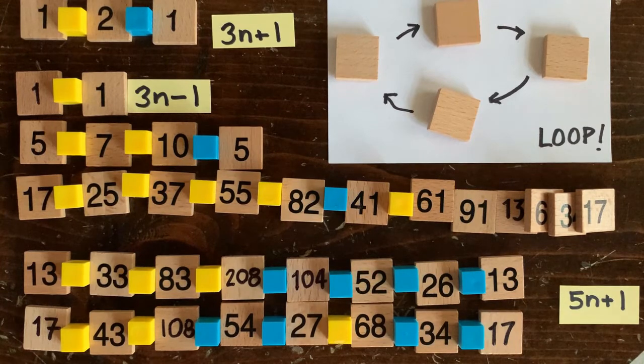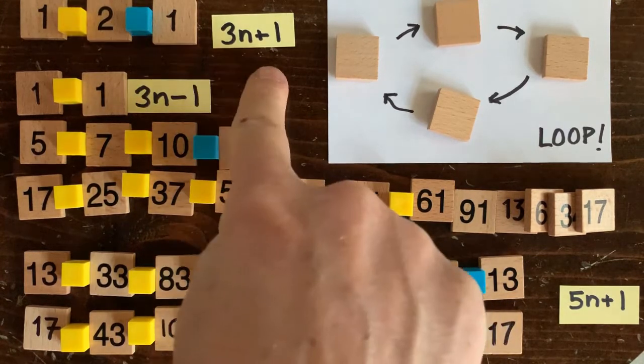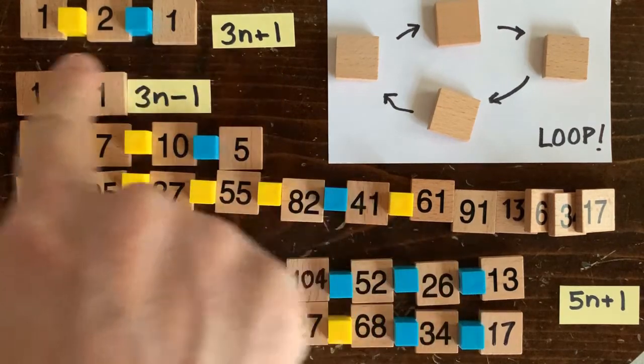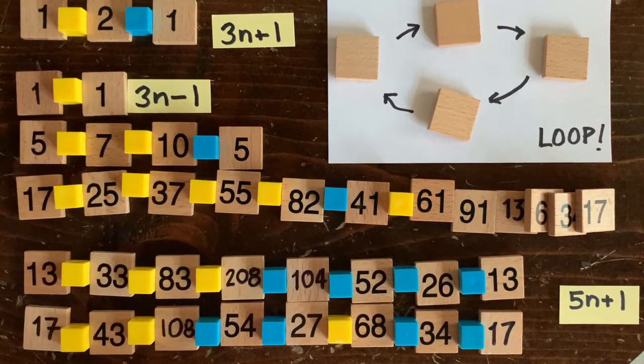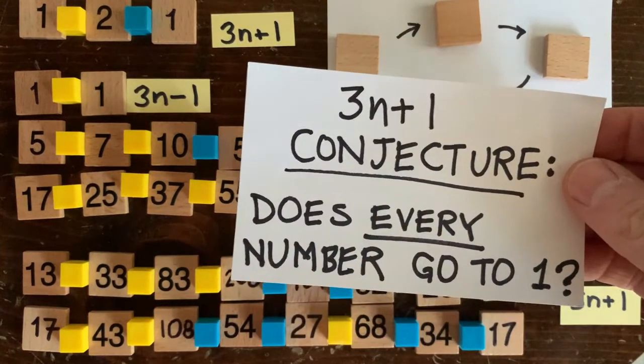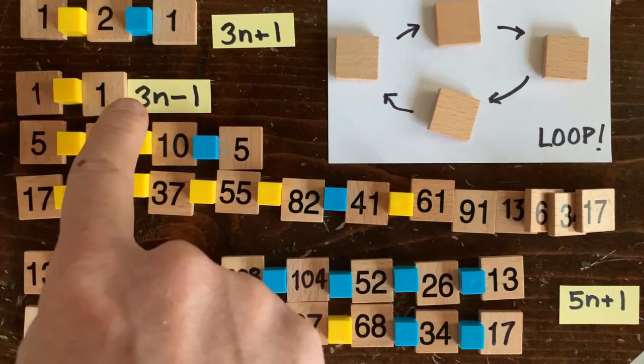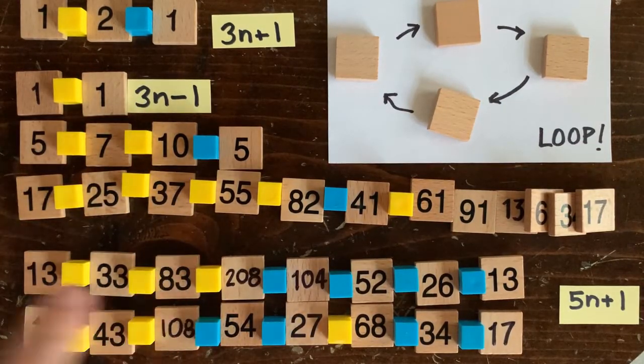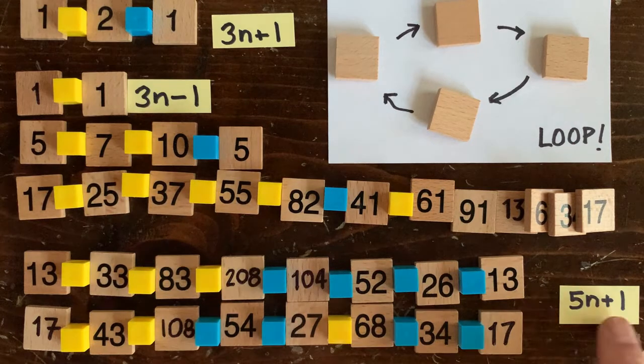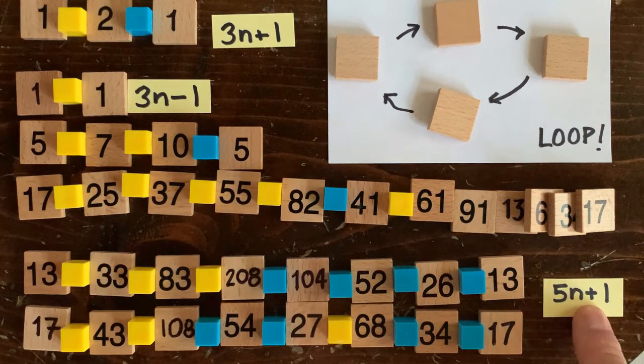By now we've found a few loops involving integers. Here are the ones that I know about. For the 3n plus 1 problem, we only know about the loop involving 1 and 2. For the 3n minus 1 problem, we saw a loop at 5 and a loop at 17. There's also a loop at 1. And we saw a couple of loops for the 5n plus 1 problem.